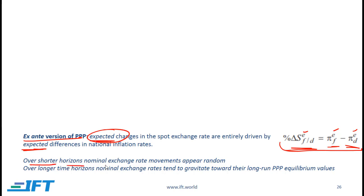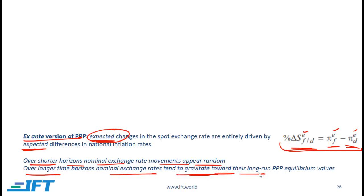Over short time horizons, nominal exchange rate movements appear to be random — in other words, purchasing power parity does not appear to hold in the short run. However, over longer time horizons, nominal exchange rates tend to gravitate toward their long-run PPP equilibrium values.